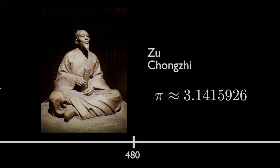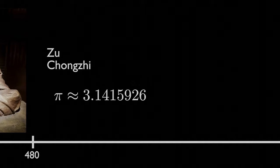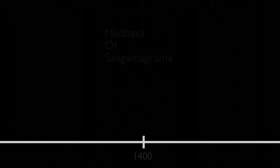Zhu Chongzhi's approximation would hold as the best approximation of Pi for nearly a century. Many individuals during this time would try to obtain a better approximation of Pi, but none were successful. Even Fibonacci, famous for the Fibonacci sequence, could not calculate more than 3 decimal places of precision in the calculation of Pi.